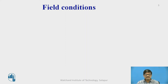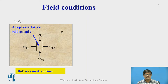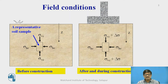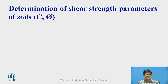Before we actually go for the laboratory conditions, let us understand the field conditions. Usually before construction, the soil mass is subjected to stress in the horizontal direction as well as the vertical direction. The vertical stress at this moment is the overburden pressure due to depth of soil equal to z. When a structure is rested on the soil mass, the load is transferred to the soil mass as an additional pressure delta sigma, so the total vertical stress becomes sigma v plus delta sigma. After continuation of this stress, soil failure takes place.